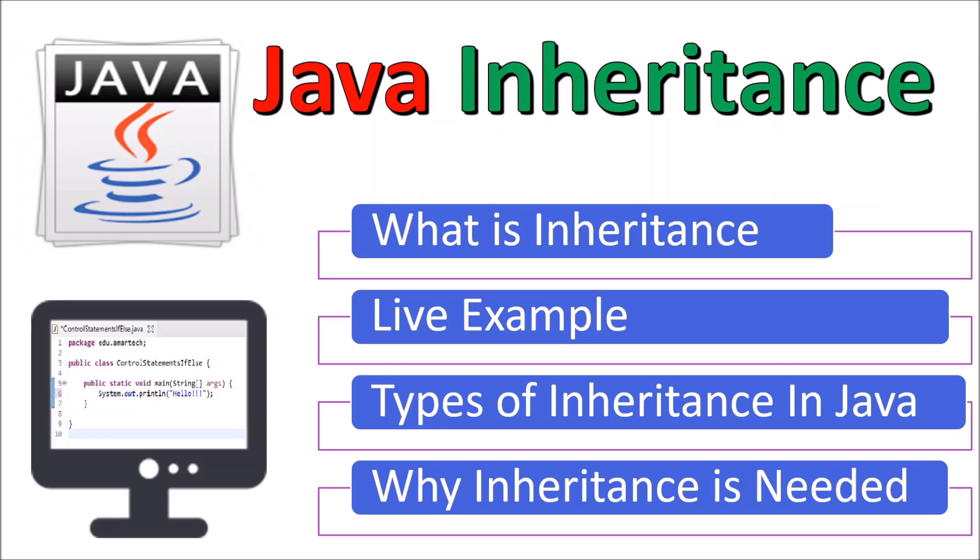In this case, the existing class is known as the parent class, and the new class inheriting from it is known as the child class. In Java, we use the 'extends' keyword to inherit a parent class in a child class. Inheritance also represents the IS-A relationship, also known as the parent-child relationship between two different classes.